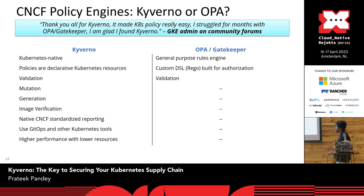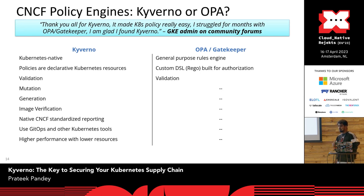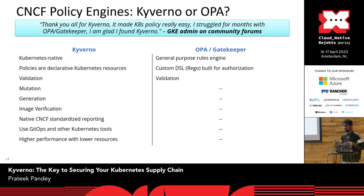There are two different policy engines currently in the Kubernetes ecosystem: one is called Kyverno, and the other is OPA. OPA is a general-purpose rule engine — you have to learn a different language called Rego to write OPA policies. But with Kyverno, it's built for Kubernetes. It's declarative custom resources — you write a policy, update it, and the resources get updated based on that.